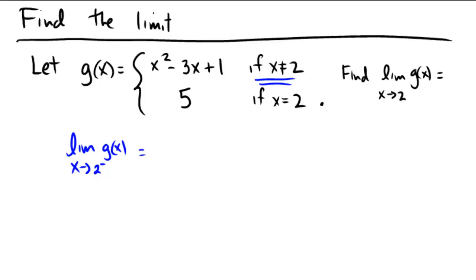So let's just follow that at 2. So 2 squared minus 3 times 2 plus 1, 4 minus 6 plus 1, negative 2 plus 1 is negative 1. So the approach from the left would be negative 1.